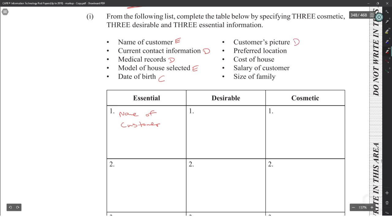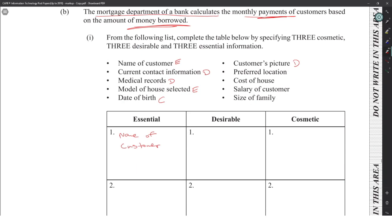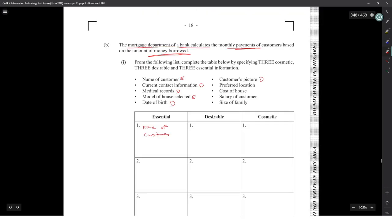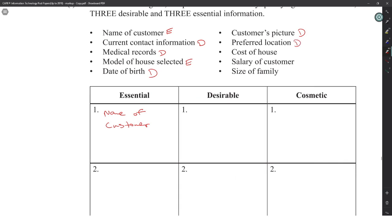Date of birth is desirable because once past a certain age you may not be able to work to pay the mortgage — so knowing the date of birth helps determine a suitable mortgage term. Preferred location and pricing would also be desirable. Contact information is essential.